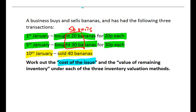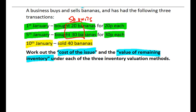The cost of the issue is the cost of those 40 bananas that have been sold. If we can work out that cost, we can compare it to the revenue generated to work out the profit on the sale. We also need the value of the remaining inventory — in this case the 10 bananas left at the end of the month. So there are two figures we're trying to identify.